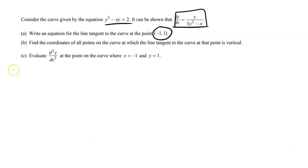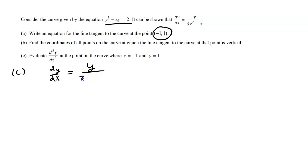Now Part C: evaluate the second derivative of y with respect to x at the point on the curve where x equals negative 1 and y equals 1. They don't give us the second derivative, so we have to find it. We start with dy/dx equals y divided by (3y squared minus x), and take the derivative of both sides with respect to x.